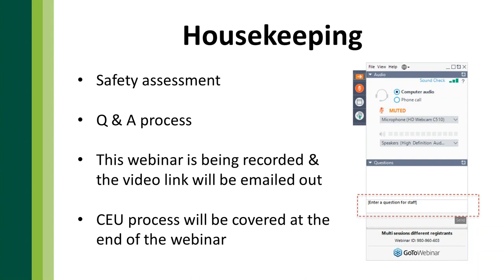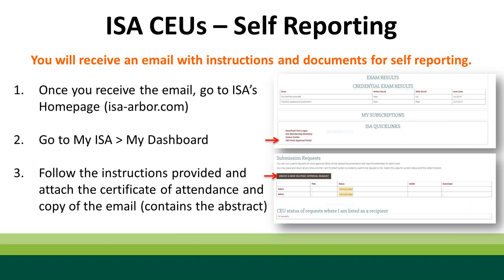This webinar is being recorded, and a video link will be sent out at the conclusion, and it will eventually make its way onto our website and YouTube page. For CEUs, this webinar will be worth one ISA CEU — International Society of Arboriculture Certified Arborist CEU. You're going to have to do self-reporting, as we put these webinars together fairly quickly. You'll receive an email on how to self-report.